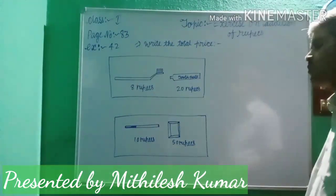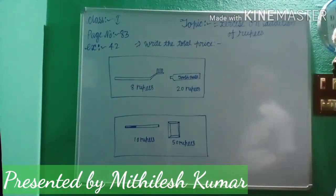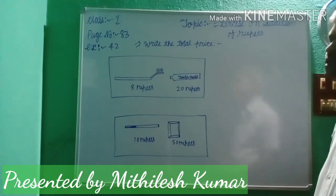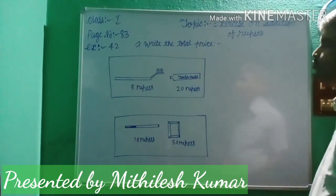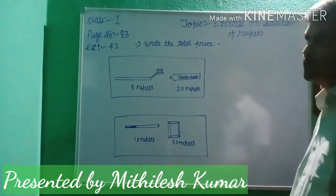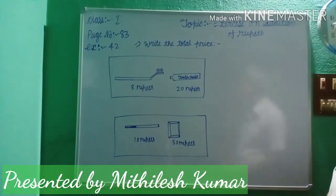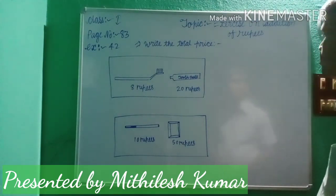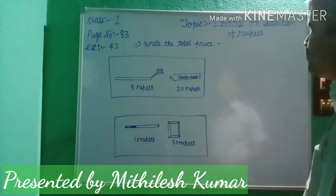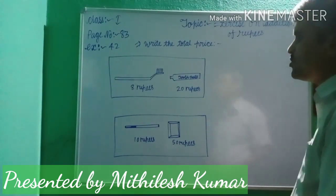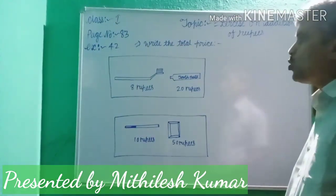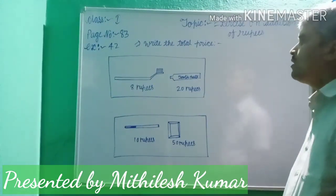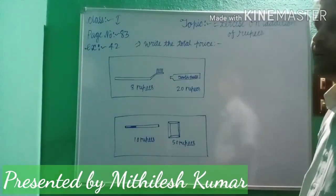The shopkeeper says: price of brush is 8 rupees each, each paste is 20 rupees, each pen is 10 rupees, and each book is 50 rupees. If you want to purchase one brush and one paste, you find out the total price. As you learned in the previous video how to add, you add them and find out the total amount.